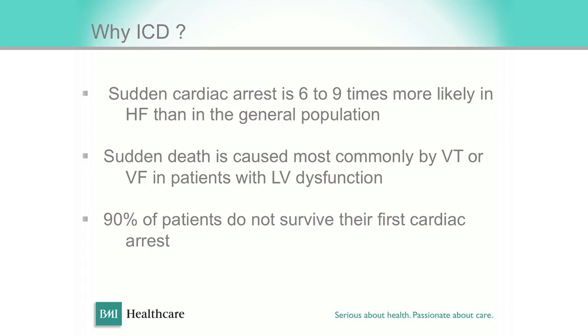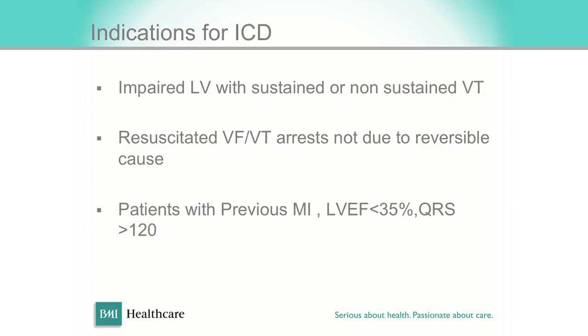All heart failure patients above grade 2 should be considered for the option of biventricular pacing to improve symptoms and prognosis. Roughly one-third of your heart failure patients will benefit from that. Why ICD? Because ventricular arrhythmias are at least six times more common in heart failure patients, so you can prevent death by implantable defibrillator. The criteria is ejection fraction below 35%, and patients with wider QRS benefit.